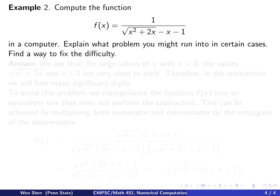Let's look at another example. We're given a function f(x) equals 1 over the quantity square root of x squared plus 2x minus x minus 1 in the denominator. We want to use a computer to evaluate this function for various values of x. For what values of x will we run into trouble or difficulty? Hint: difficulty means probably loss of significance. And if that should happen, could you find a way to fix this difficulty?